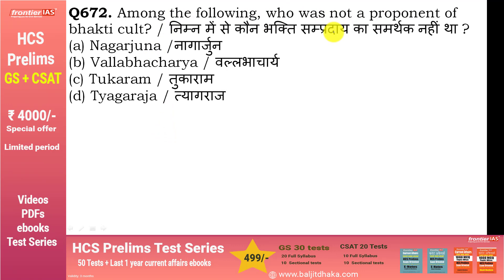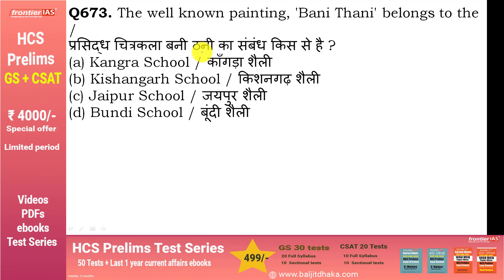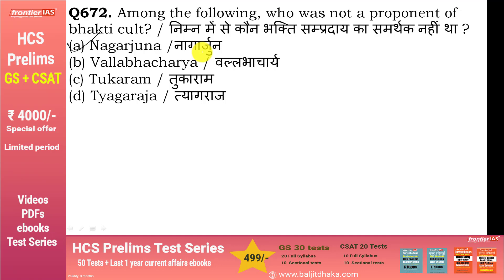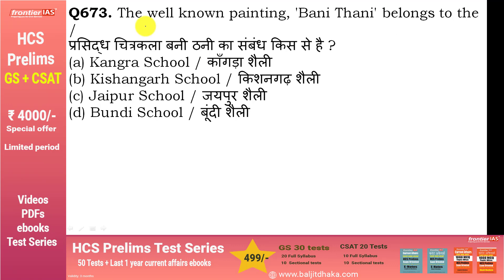Among the following, who was NOT a proponent of the Bhakti cult? — Nagarjuna. Nagarjuna एक Buddhist saint/monk थे, और मिलिंद पान्हो book इन्हें attribute की जाती है. बाकी options — तुकाराम, त्याग राज, अल्वार acharyas जैसे माधव चारे, निम्बक चारे — ये सब bhakti movement से थे.